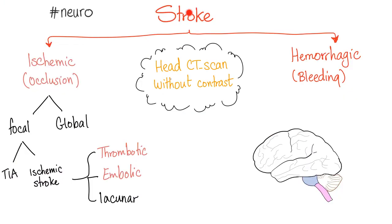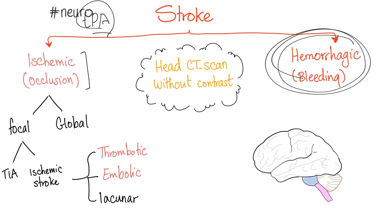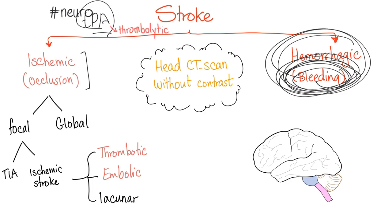Stroke is divided into ischemic stroke and hemorrhagic stroke. Ischemic stroke is due to occlusion of an artery going to the brain. Hemorrhagic stroke is bleeding into the brain — the artery bursts. How do you differentiate between the two? Head CT scan without contrast. This is very important: if you assume ischemic stroke and give TPA, but it's actually hemorrhagic, the patient will bleed into the brain.